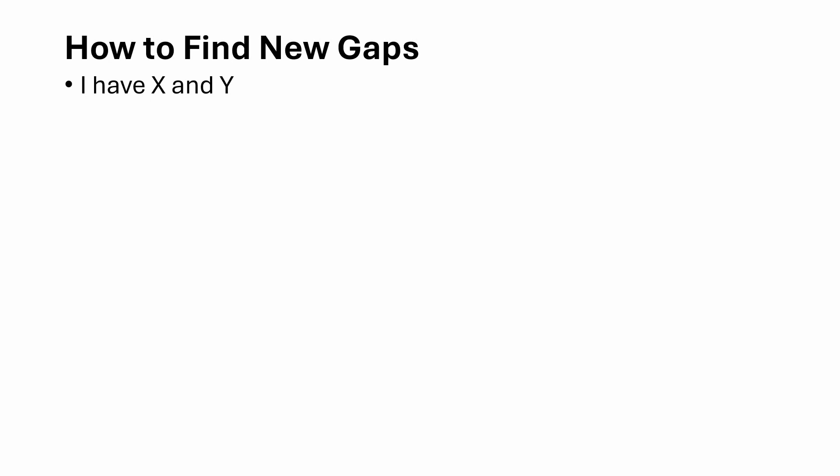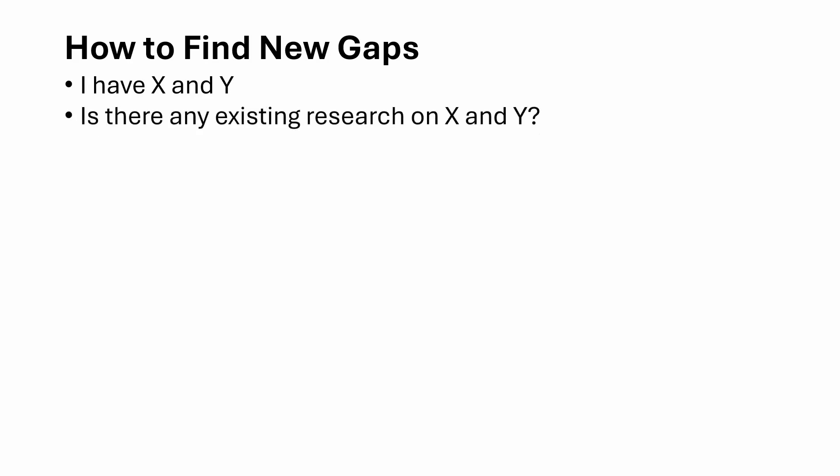Let's say we have two variables: variable X and variable Y — that is, an independent variable and a dependent variable. The first thing you need to do is ask: is there any existing research on the relationship between X and Y?